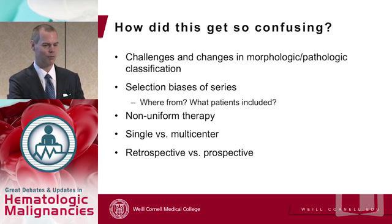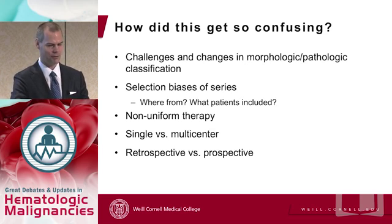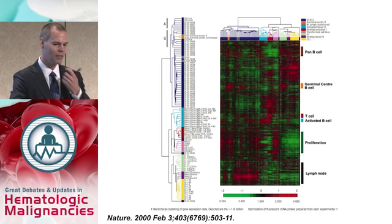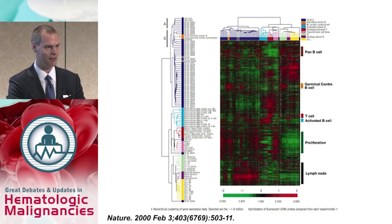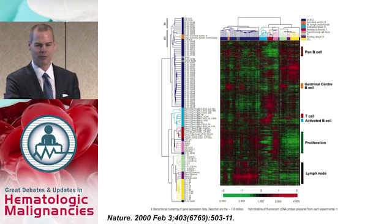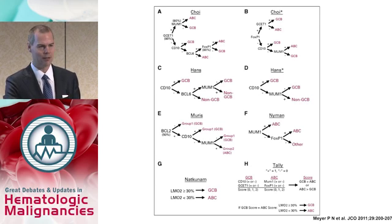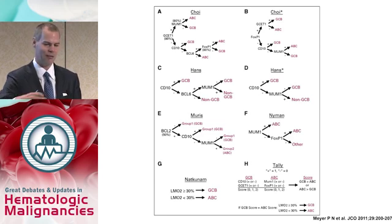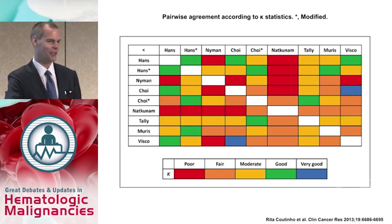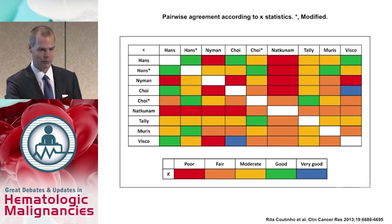A lot of the confusion has to do with changes in morphology and pathologic classifications, in particular differences between gene expression profiling versus immunohistochemistry, along with probable selection bias and non-uniform therapy across studies. Everyone widely agrees that gene expression profiling is the gold standard for differentiation between ABC and GCB subtypes. Unfortunately, gene expression profiling is not available anywhere outside a research setting, so several groups have looked at different immunohistochemistry algorithms — this is what we currently use at Cornell.